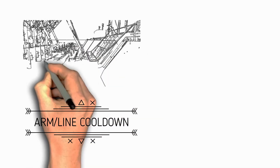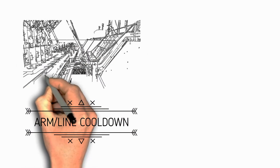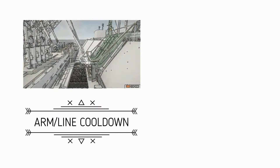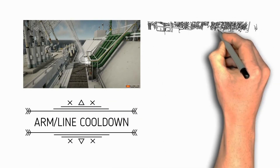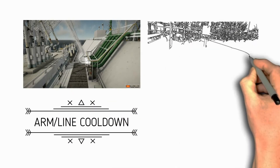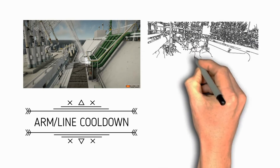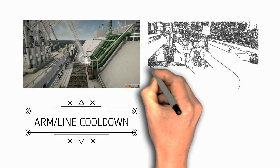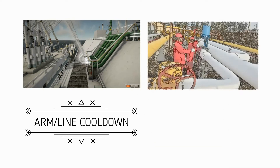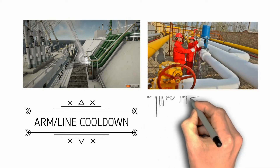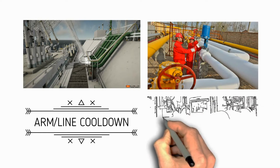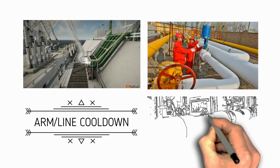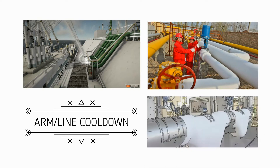Next is arm cool down. Cargo systems are designed to withstand a certain service temperature. If this is below ambient temperature, the system must be cooled down to the temperature of the cargo before cargo transfer. For LNG, an overly rapid cooldown can cause thermal shock leading to brittle fracture on cargo lines and cargo tanks, so cooldown operations must be carried out carefully in accordance with instructions.